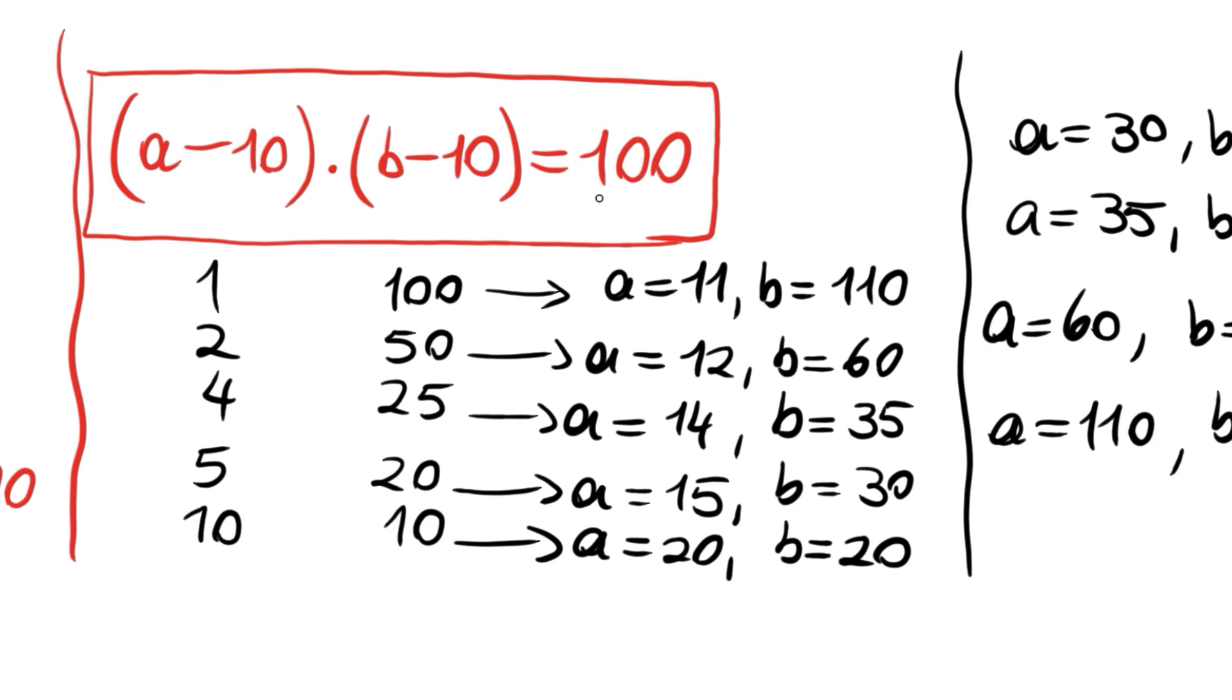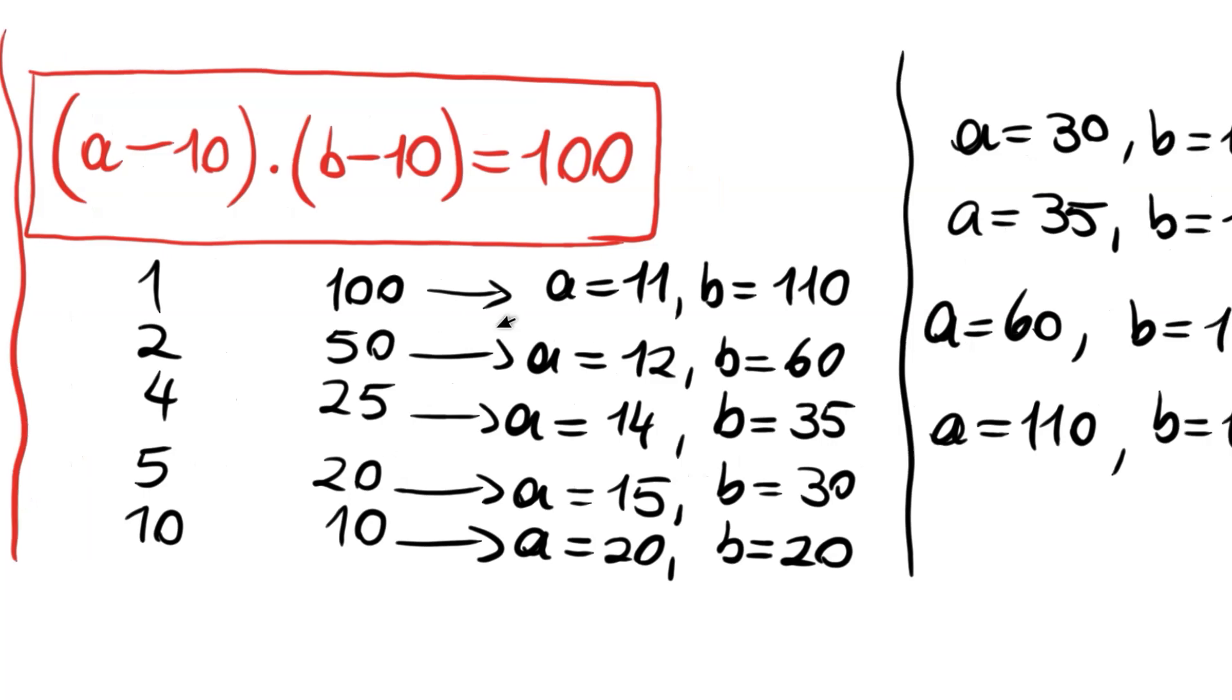Also we can find, let me leave that for you, we can find the negative integer solutions thinking about negative 1 times negative 100, negative 2 times negative 50. You can find other solutions using the same logic here. Thank you for watching and see you in the next videos.